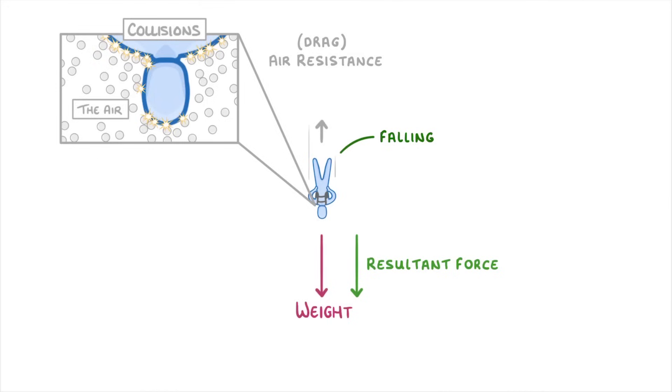So effectively, as the person falls and bangs into all these tiny air particles, they act to slow the person down. And the size of the air resistance will depend on how many of these collisions there are. Now, this number is going to depend on two main things.